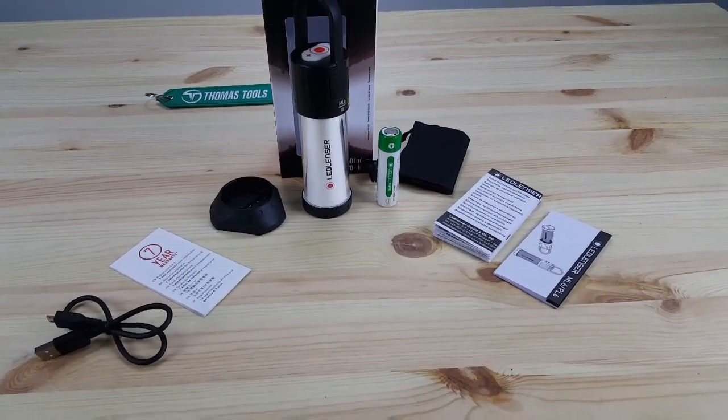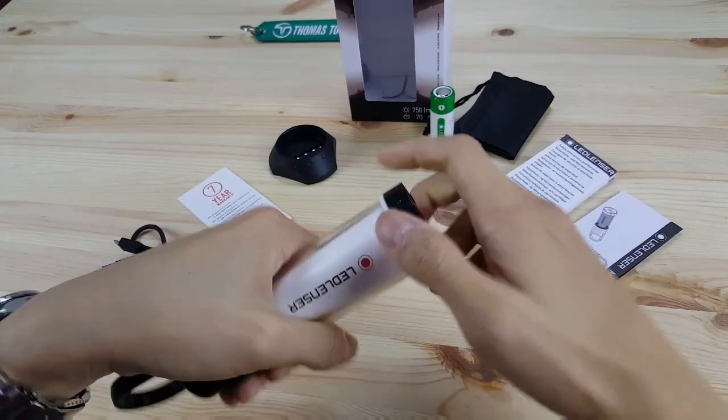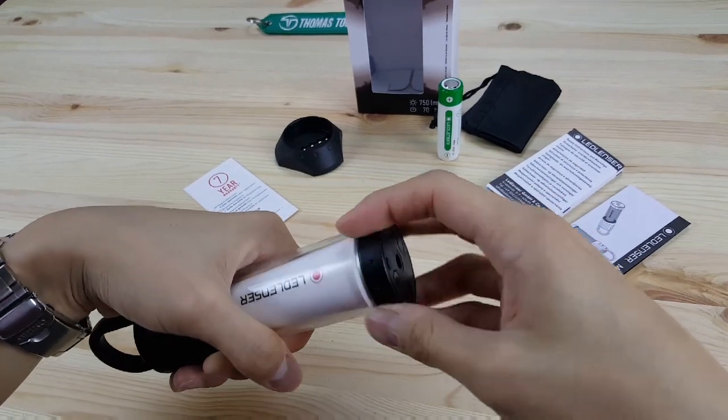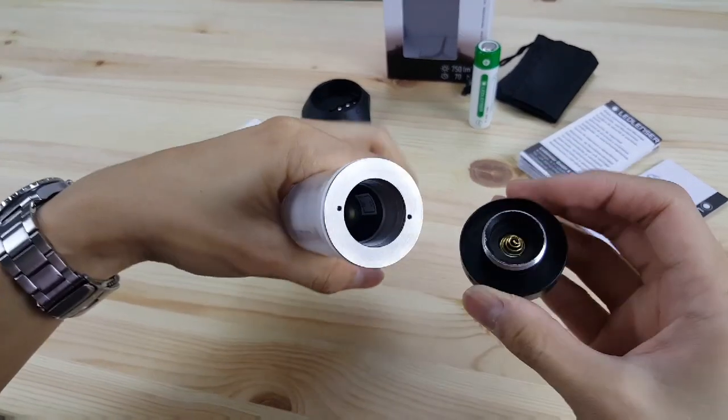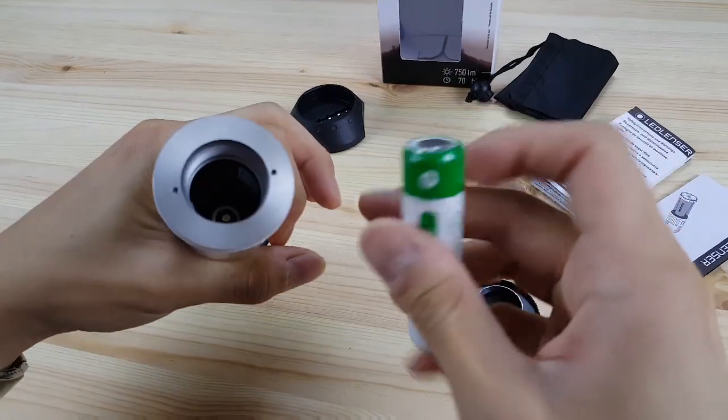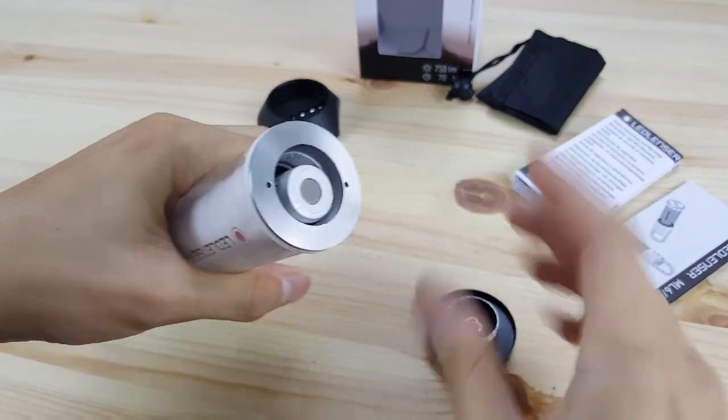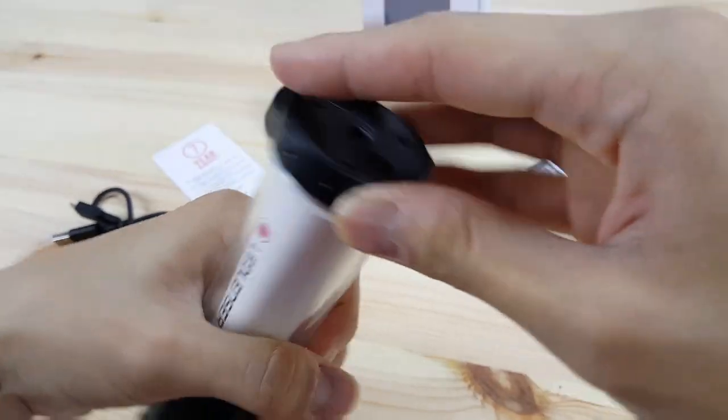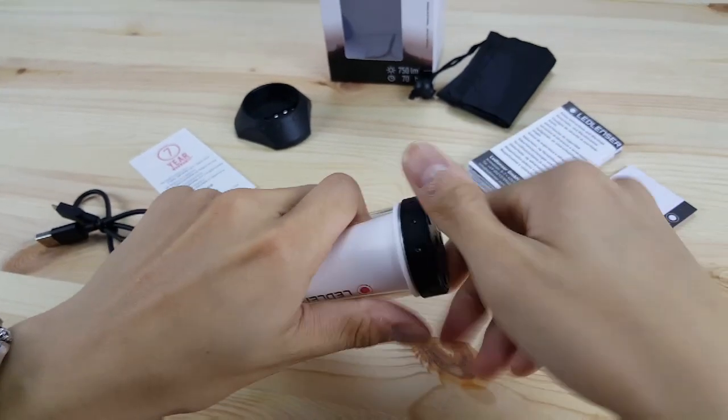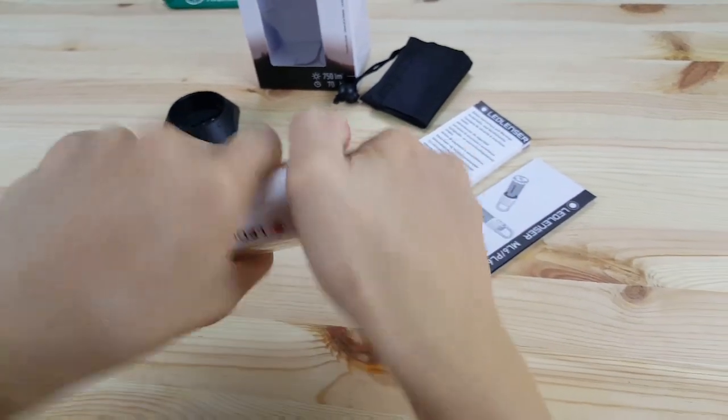These are the accessories included. To insert the battery, you can unscrew the bottom and reveal the battery bay. Then you insert the battery that is included. Screw back the bottom and we should be good to go.